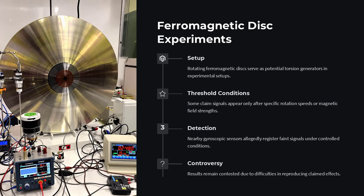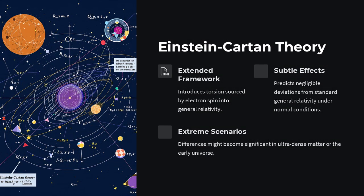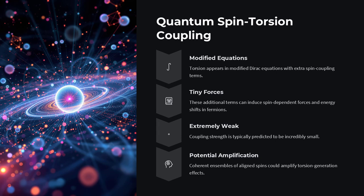A matching torsion detector, perhaps a spin-polarized crystal or a specialized gyroscope, could pick up these minute twists as changes in phase or torque. It's a bit like Morse code sent not through wires or radio, but through the twisting of reality itself.